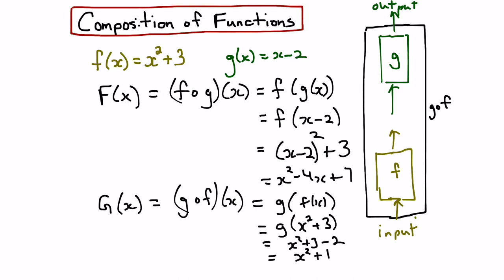We can test it out. Let's have an input. Let's say we pick the number 1 that goes into the f function. So 1 squared plus 3 gives us an output of 4. And then 4 goes into the g function, so 4 minus 2 gives us an output of 2. Now let's compare. Let's take the 1 and put it directly into our composed function. So 1 into x squared gives me 1 plus 1 is 2. We get the same output.